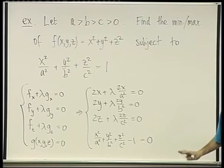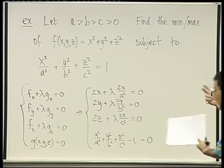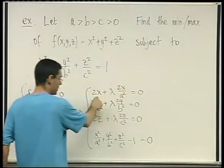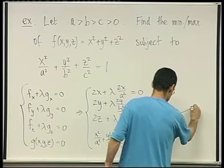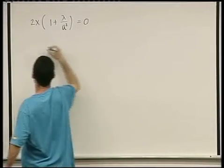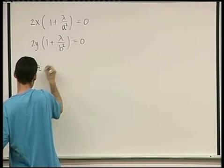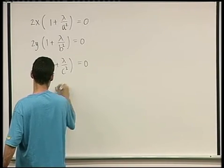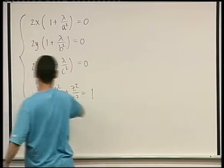How do I solve them? It's usually good to take a step back and see if there are symmetric phenomena you can take advantage of. I'm going to pull out a 2x from the top equation, 2y from the second, and 2z from the third. Rewriting the system: 2x(1 + λ/a²) = 0; 2y(1 + λ/b²) = 0; 2z(1 + λ/c²) = 0; and the constraint x²/a² + y²/b² + z²/c² = 1.